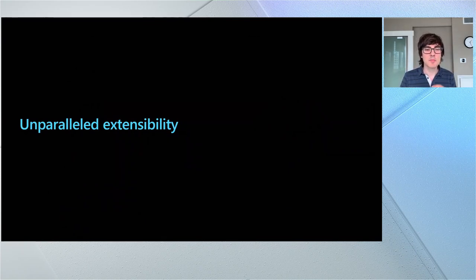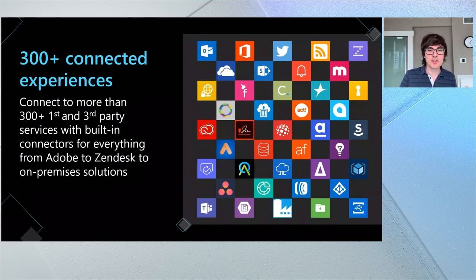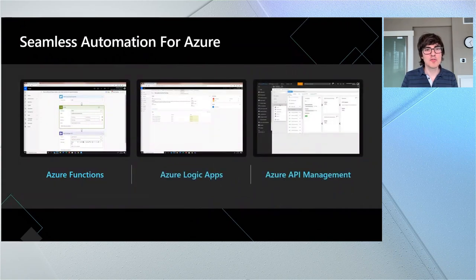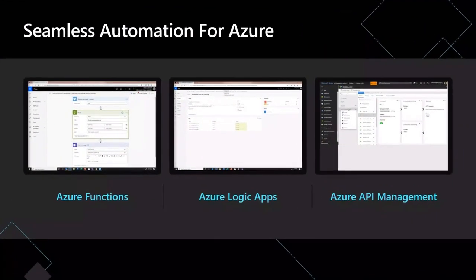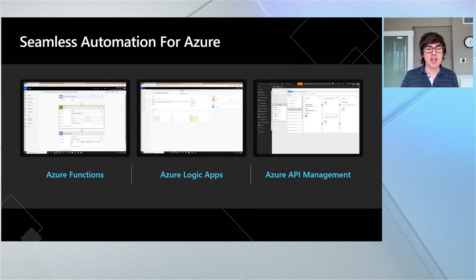Before the demo, I want to talk about extensibility inside of Power Automate, which I think is really important for the developer audience here at Build. With Power Automate, we have over 300 connectors that talk to first and third-party services, everything from Adobe to Zendesk. You can also connect to logic you've built and run inside of Azure. That means if you have Azure Functions with advanced logic like a scheduling formula, you can do that. If you have Azure Logic Apps to deploy integration between backend systems, you can do that too. And if you have API Management — really the best way to surface your organization's APIs — you can connect to that natively as well.